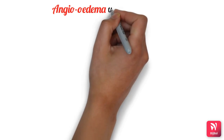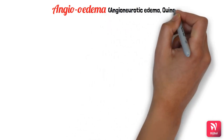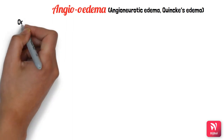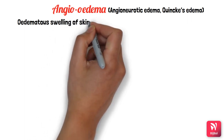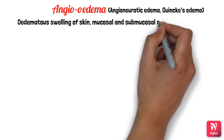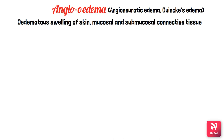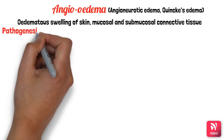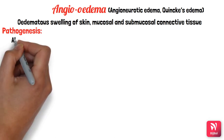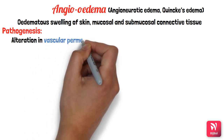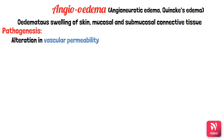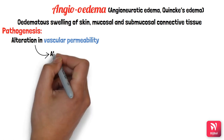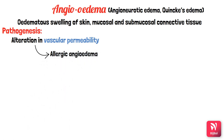Angioedema, also called angioneurotic edema or Quincke's edema, is a condition where edematous swelling occurs in skin, mucosal, and submucosal connective tissue. The swelling results from fluid accumulation due to increased vascular permeability, which allows fluid to move into interstitial spaces.